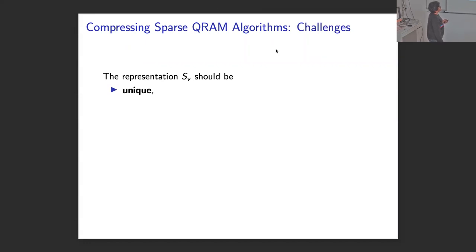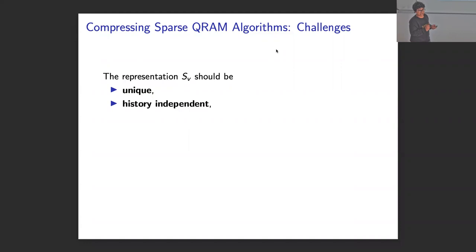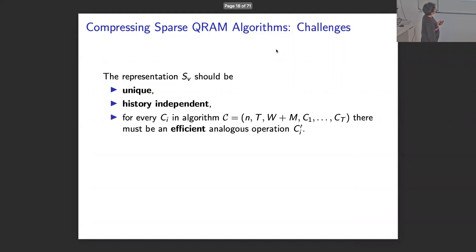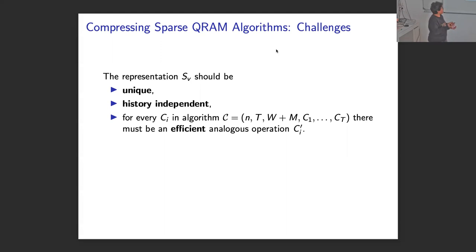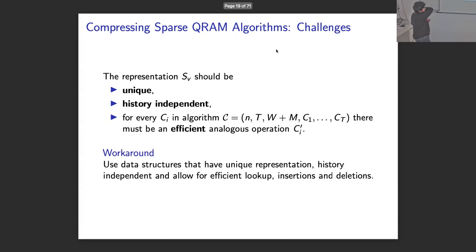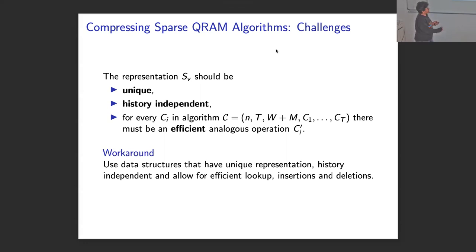The broad idea is to represent state V as S_V instead of the state V directly. But another challenge is we have to ensure that every gate applied in the original m-sparse algorithm has an analogous efficient implementation in the new compressed algorithm. Otherwise I'm not giving you a compressed algorithm. So the first thing we need is that the representation must be unique. We also need the representation to be history independent — meaning when you create a set S, by looking at the elements in the data structure, you should not be able to tell what was the last element added. The data structure should mask out all history information.